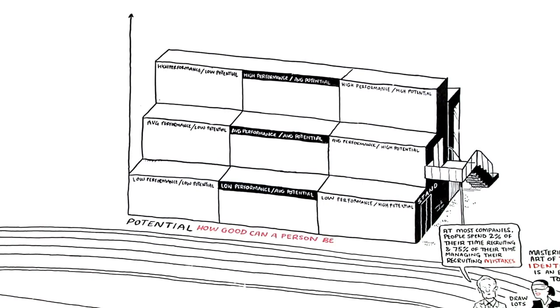The x-axis assesses potential, how good can a person become in the future, short term as well as long term. The y-axis assesses current performance, the result that a person delivers here and now.